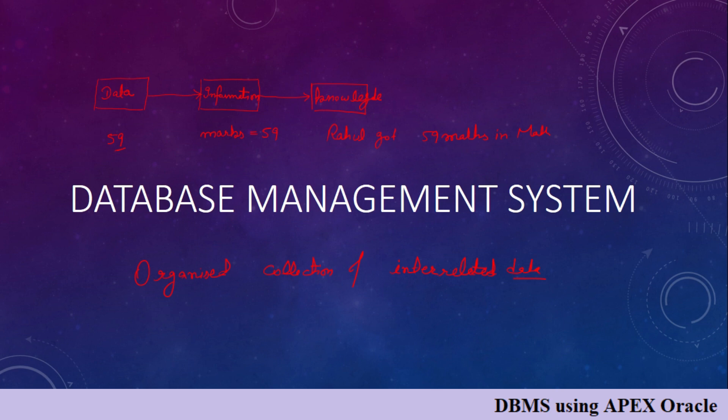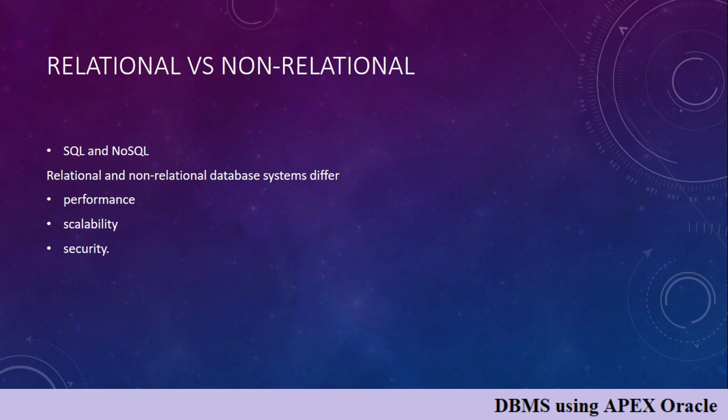Database management systems are divided into two parts: relational and non-relational, also called relational — meaning SQL — and non-relational — meaning NoSQL. We differentiate these two by three criteria: performance, scalability, and security.